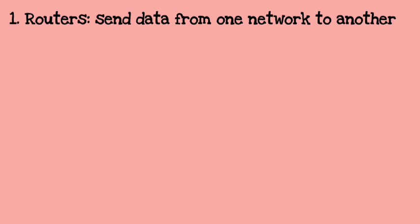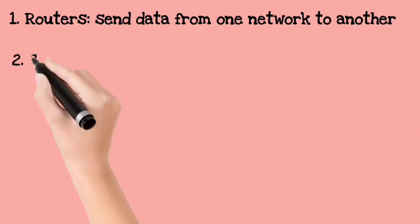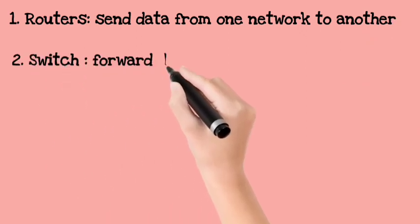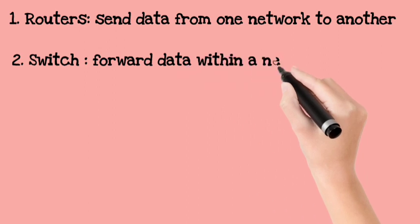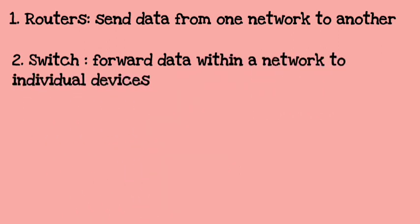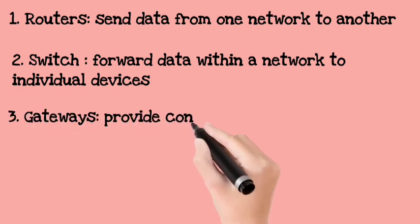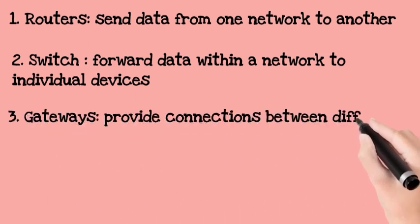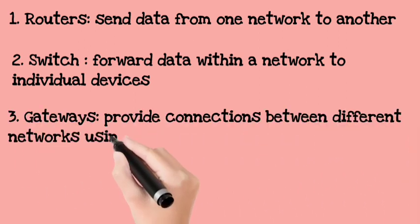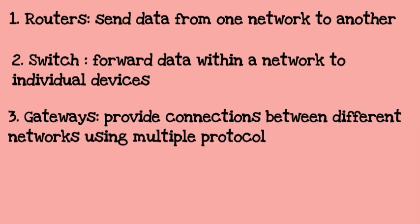Now let's see some appliances used in enterprise networking. First is the router, which is used to send data from one network to another network. Second is the switch, which forwards data within a network to individual devices. Third is gateways, which provide connection between different networks using multiple protocols.